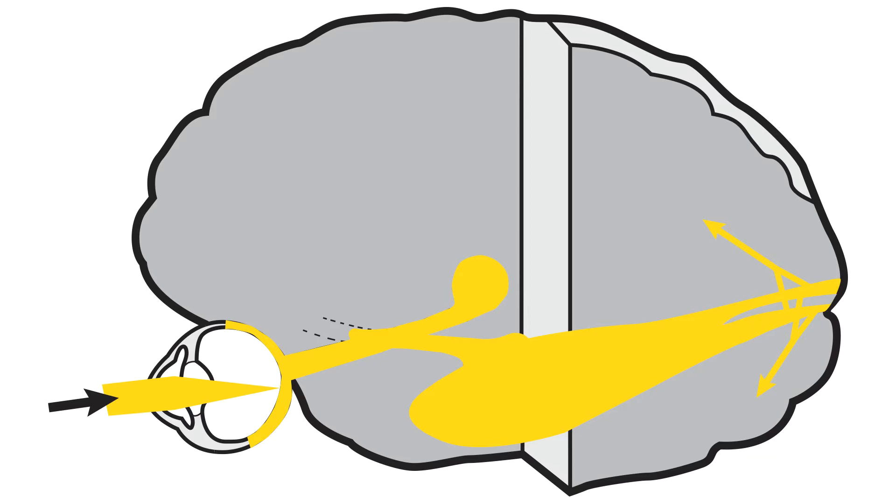The optical segment focuses light on the retina using the refractive powers of the cornea and lens. Vision Pathway Part 2 reviews the optical segment.